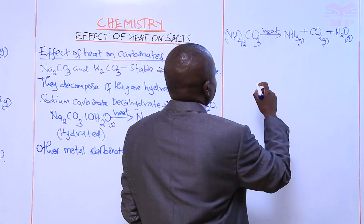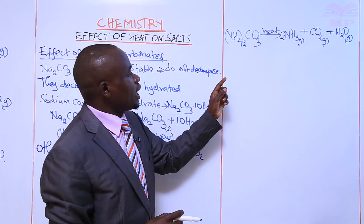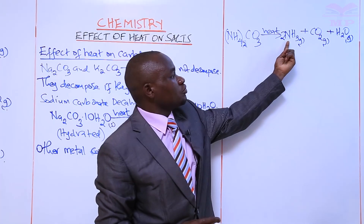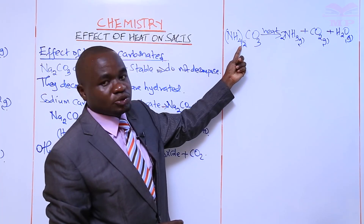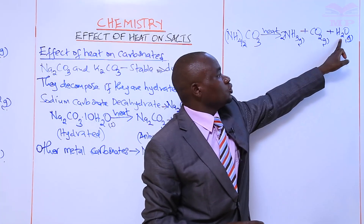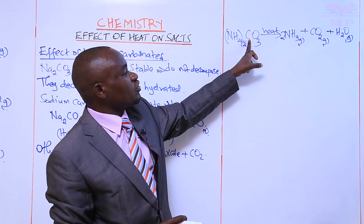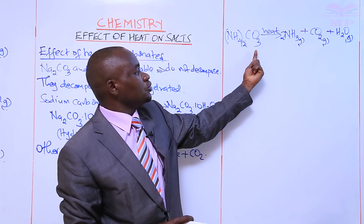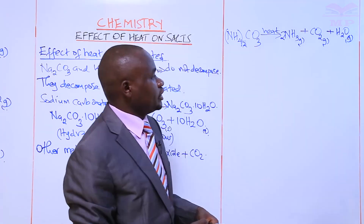Let us balance the equation for ammonium carbonate decomposition. We put a 2 in front of ammonia gas. This side then has 2 atoms of nitrogen. Hydrogen: 2×4 = 8 on the left; 2×3 + 2 = 8 on the right — balanced. Carbon: 1 atom on each side — balanced. Oxygen: 3 on the left, 2+1 = 3 on the right — balanced. The equation is balanced.